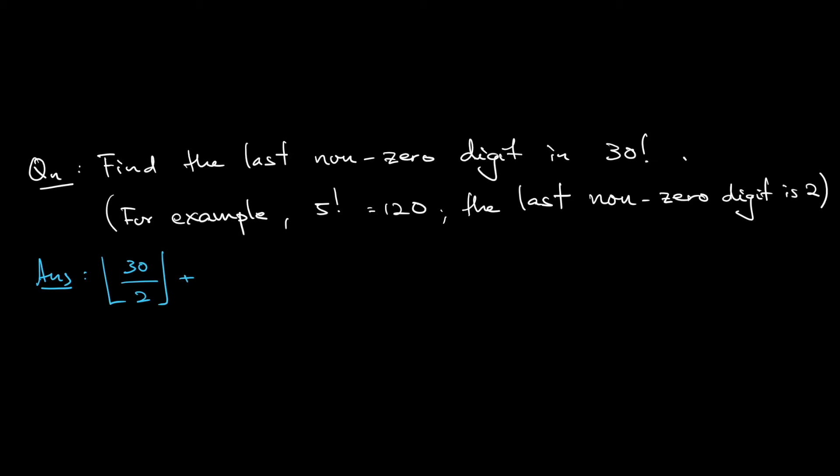It's just the floor of 30 divided by 2. But notice not all multiples of 2 has only one factor of 2. Multiples of 4 would count twice, because 4 is 2 squared. I also need to find the multiples of 4, take the floor of that. Then the same logic: every multiple of 8 should be counted 3 times, because 8 has 3 factors of 2. Plus 30 divided by 2 to the power 4. And 2 to the power 5 is already more than 30, so do not count. This is 15, this is 7. Add all together, you will get 26.